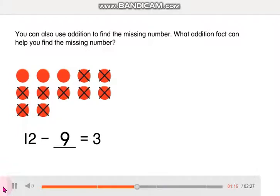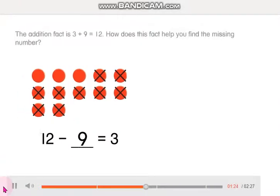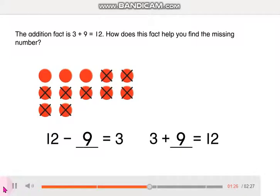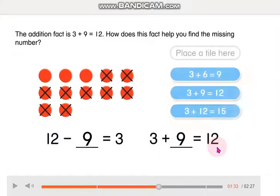You can also use addition to find the missing number. What addition fact can help you find the missing number? The addition fact is 3 plus 9 is equal to 12. How does this fact help you find the missing number? Select your answer.